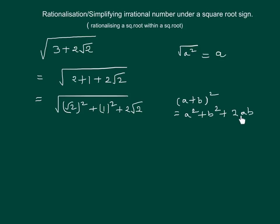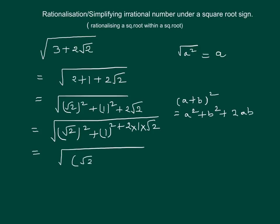Also, the term 2ab has been achieved since 2√2 can be written as 2 · 1 · √2. We can write this as (√2 + 1)². Simply using √(a²) = a, we get √2 + 1 as the required answer.